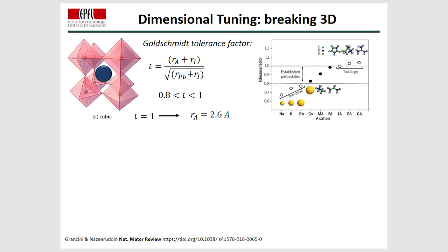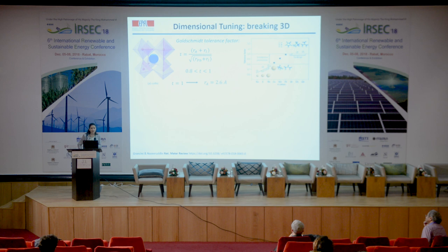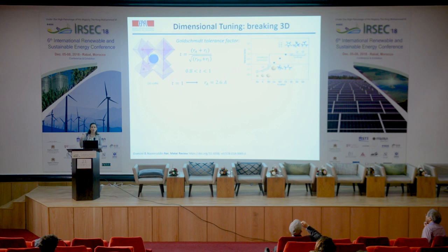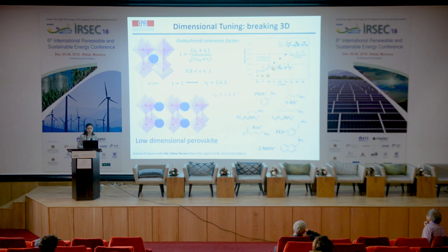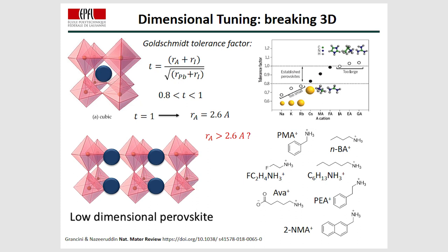Another approach involves the tolerance factor, which is an empirical rule very useful for screening new organic cations that can be incorporated into the 3D structure. There is an optimal value to keep the cubic 3D structure, which is between 0.8 and 1. However, it has also been demonstrated in our group that the inorganic layer can accommodate slightly larger organic cations. If we go beyond the maximum tolerance factor T equal to 1 and a radius ratio of 2.6, a larger library of different cations opens up, forming what is called low-dimensional perovskite.